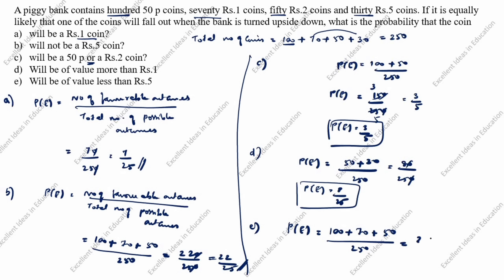100 plus 70 is 170, plus 50 is 220. 220 divided by 250 — cancel the zeros — the final answer is P(E) equals 22 by 25.